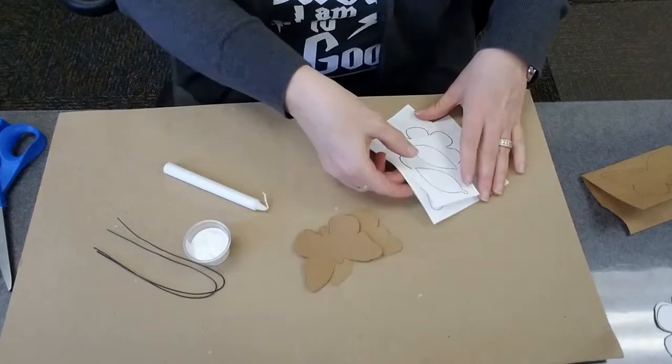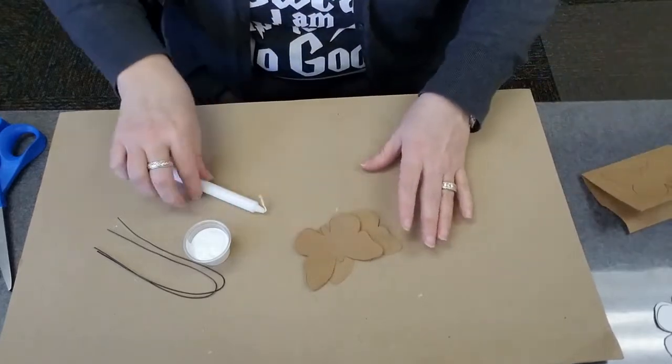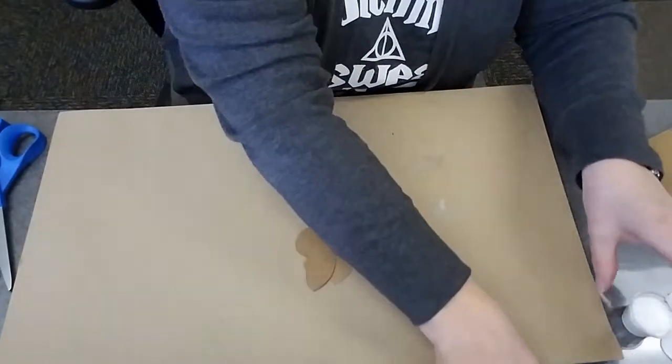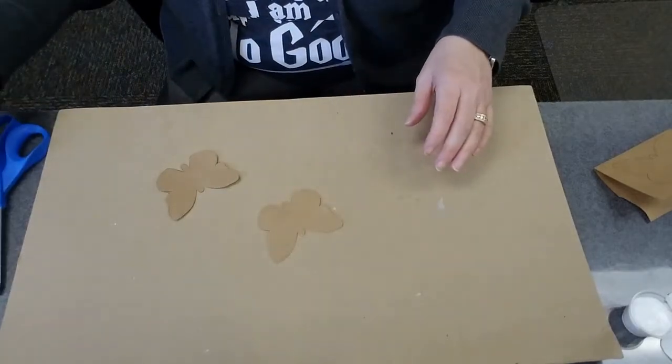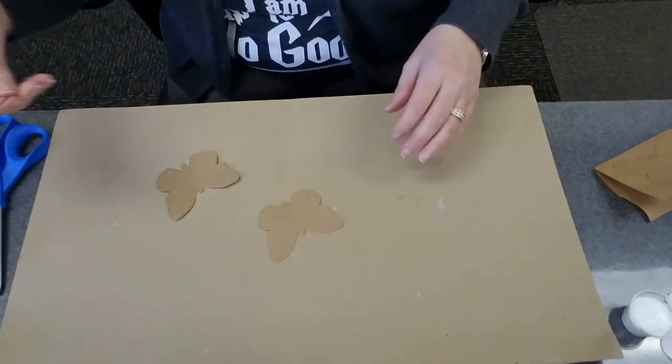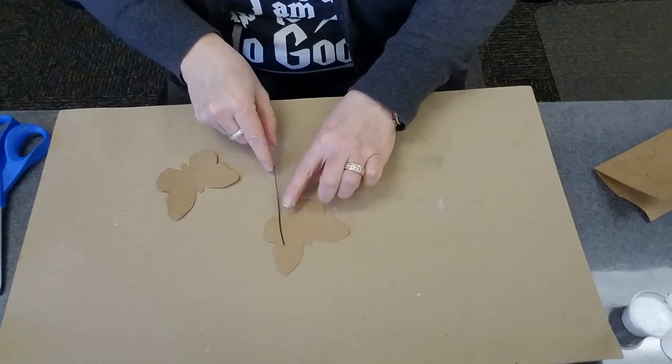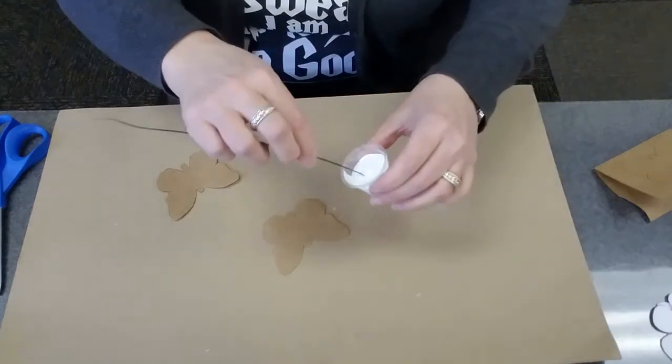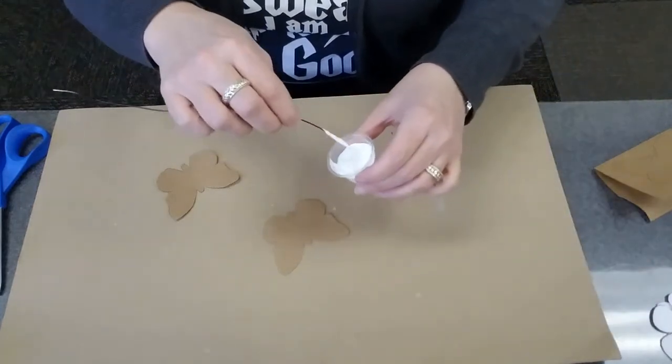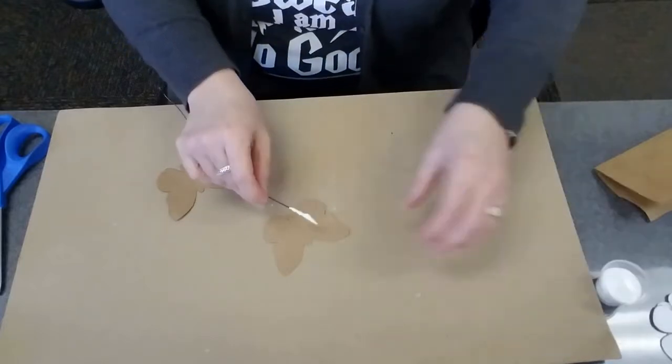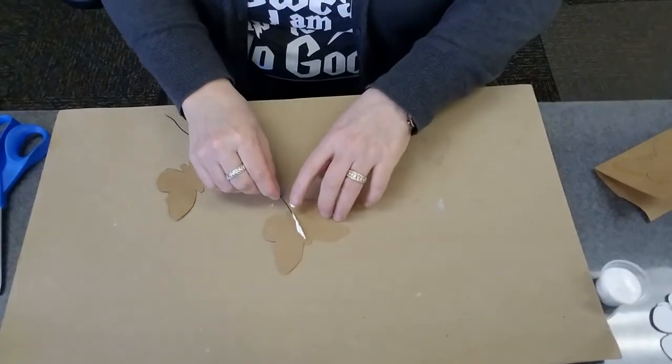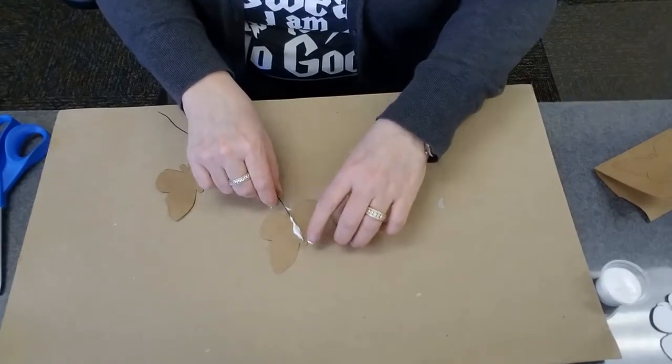So the first thing you're going to do is you're going to take your cutout butterfly, and you're going to take your piece of wire, one of your pieces of wire, your long piece of wire, and you're going to glue it down. You're going to get messy, unless you like to be neat. You're going to put your wire down, you're going to glue it down.